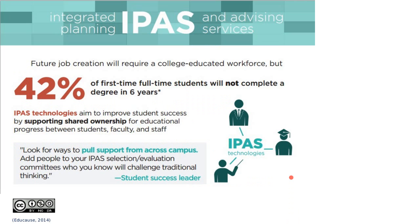Some work I had been party to with EDUCAUSE involved interviewing dozens of schools and their chief information officers and chief success officers and getting survey data. Most students that enter secondary education don't necessarily finish a degree within six years — that number, 42%, is pretty scary. It varies between community colleges and universities, private and public, but we all have challenges around student success and retention.